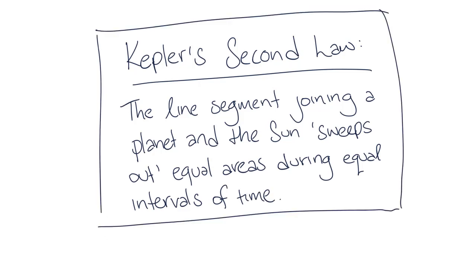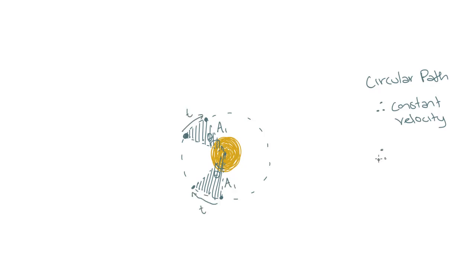So let's draw a diagram of a circular path. For a circular path, we immediately know from our understanding of uniform circular motion that the planet will travel at a constant speed, and therefore for the same interval of time a planet will sweep out equal areas.